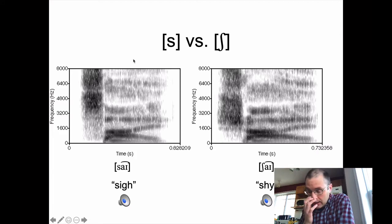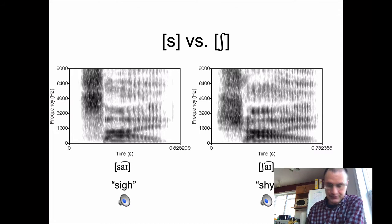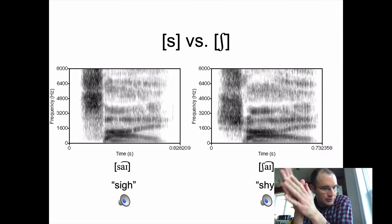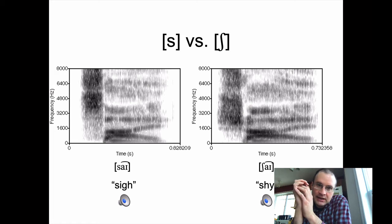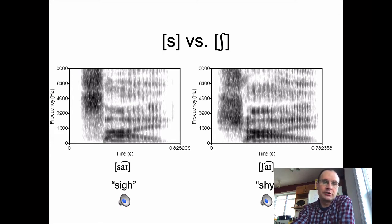The reason why is because the filters are different for those two fricatives. They have similar sound sources in that you're producing a lot of obstacle turbulence at the back of the teeth. They both are directing airflow at the back of the teeth, so they are obstacle fricatives.